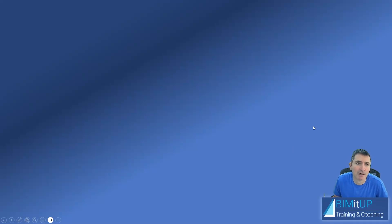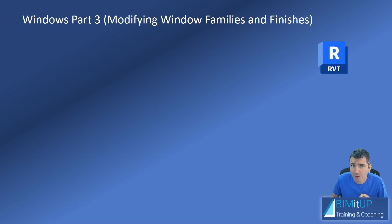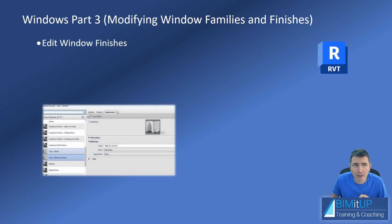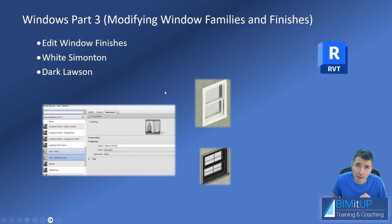Hi everyone, Alex here. Today we're going to continue with our windows — this is Part 3. I'm going to be showing you how to modify window families and finishes. For that, I'm going to show you how to get into the family editor and modify finishes. We're going to modify two different types of windows: our white frame by Simington and a darker frame by Lawson. Let's get started.